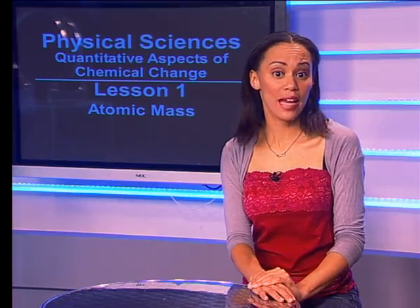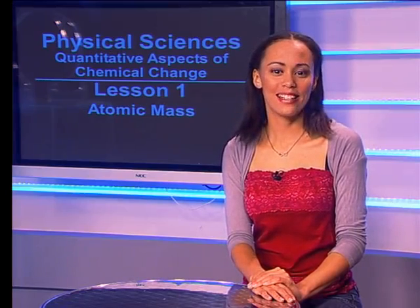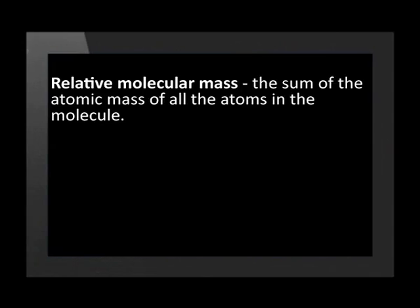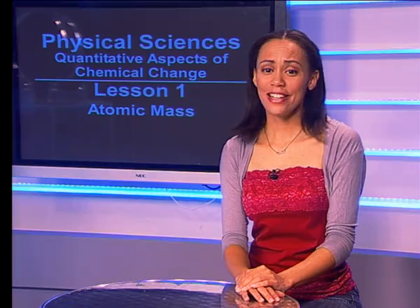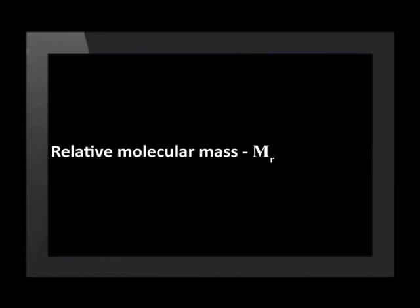We can also calculate the relative mass of molecules and of ionic compounds. Let us first look at the mass of molecular substances. Relative molecular mass is the sum of the atomic masses of all the atoms in the molecule. Examples of molecular substances are water (H₂O), carbon disulfide, ammonia (NH₃), and carbon dioxide. The symbol for relative molecular mass is Mr subscript r. This quantity has no unit.